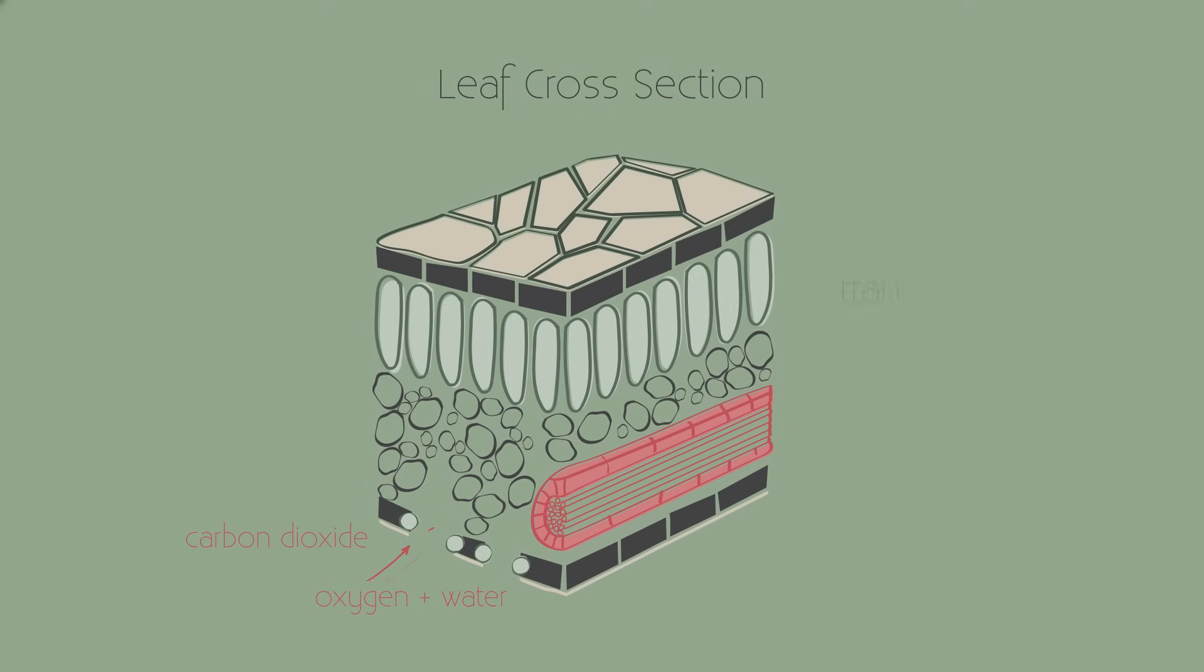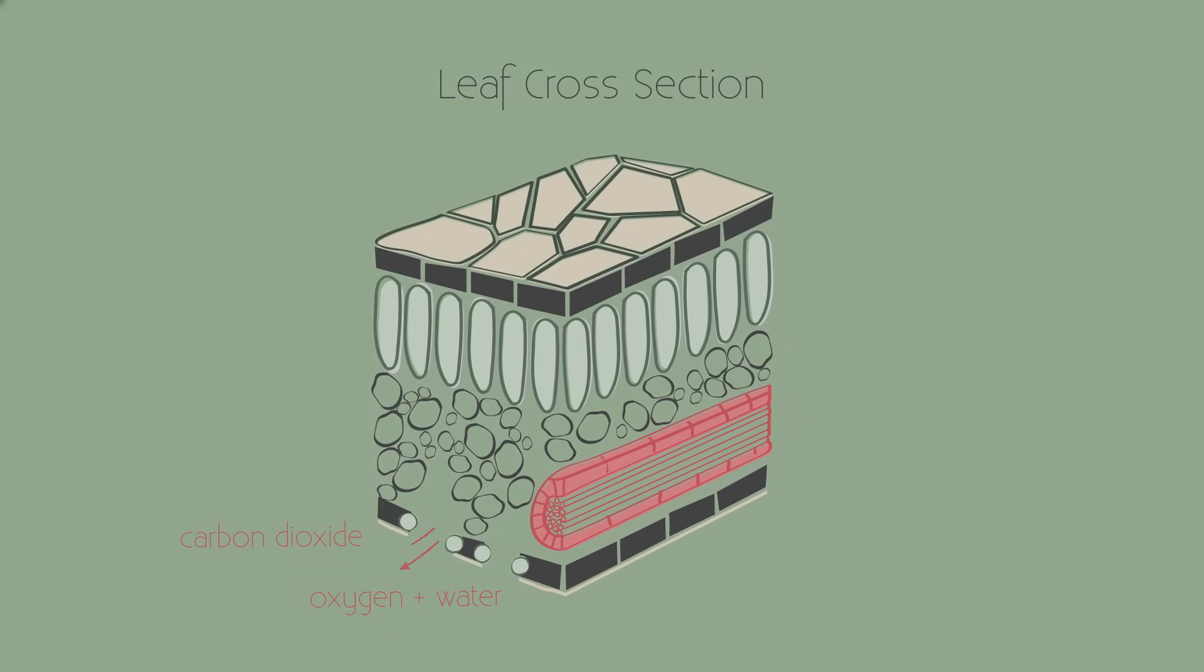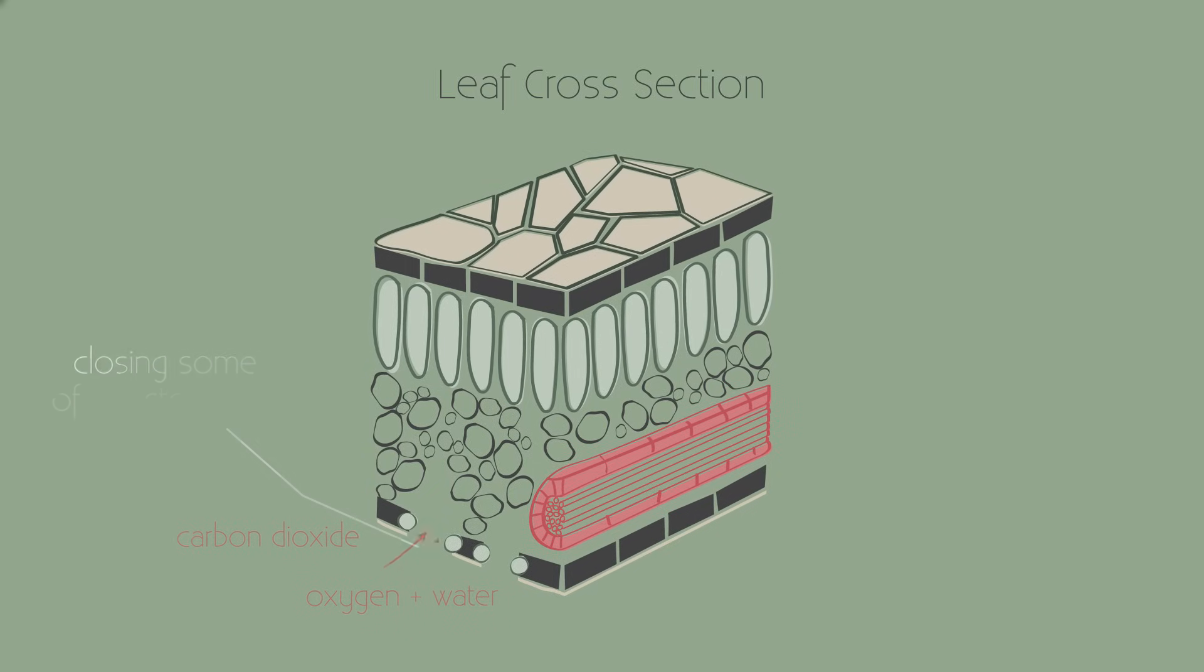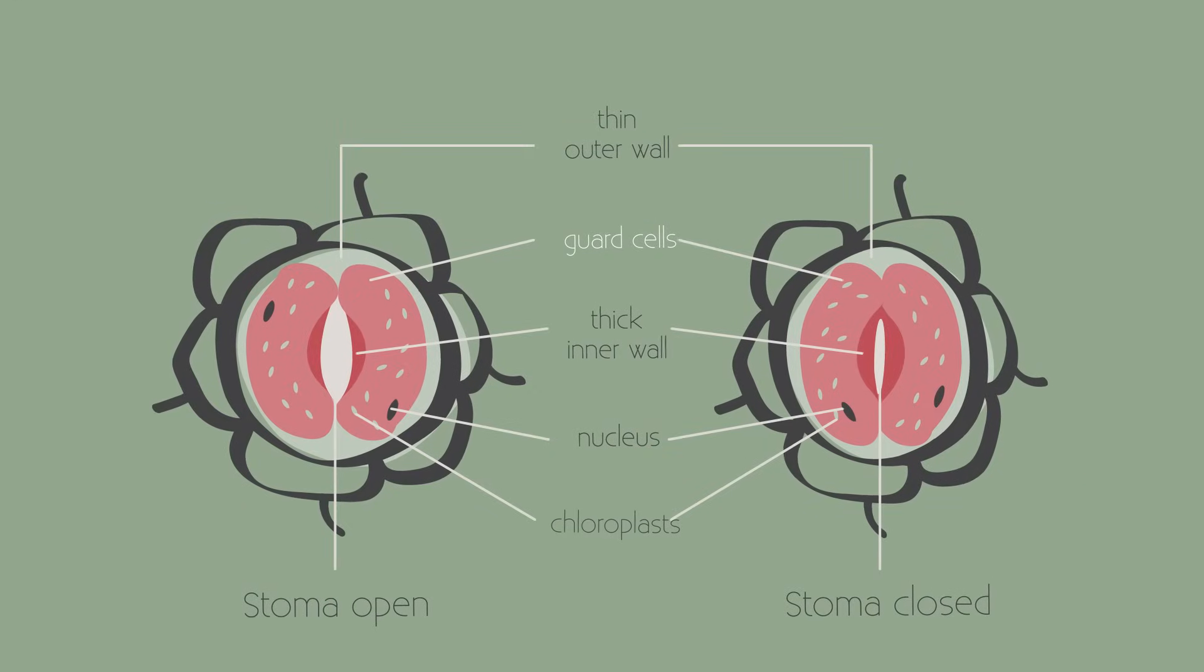If the rate of transpiration increases, then the rate of water absorption by the roots needs to increase too. When water is scarce or if the roots are damaged, the plant needs to reduce its transpiration rate by closing some of their stomata. There are guard cells on either side of the stomata, which regulate this.